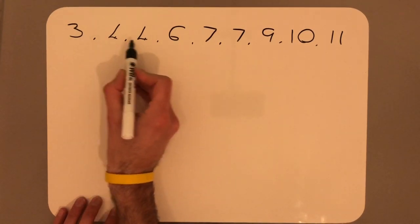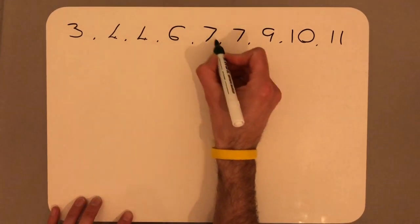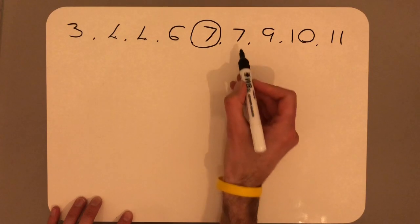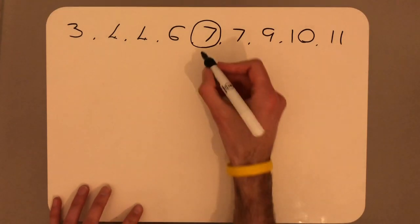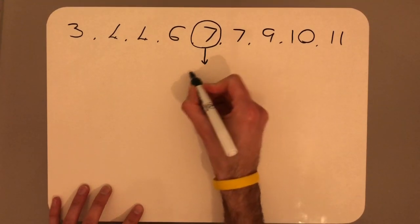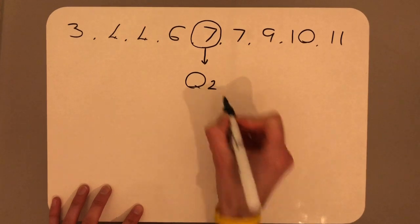One, two, three, four. And what we'll do is we'll hold this term. One, two, three, four. So you should see that we have four pieces of data on either side of the median, which we now can call this Q2.